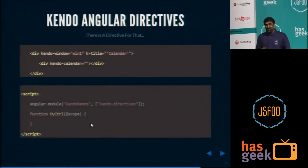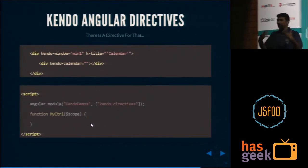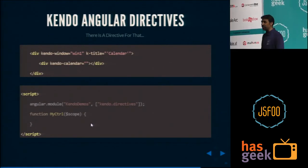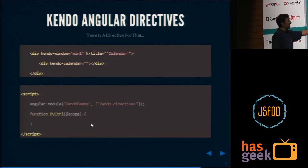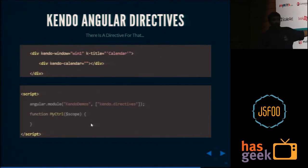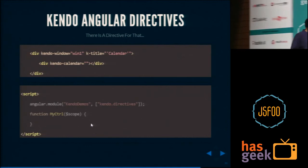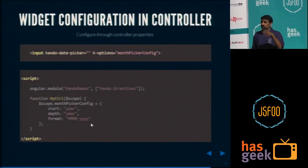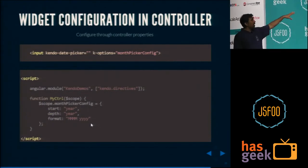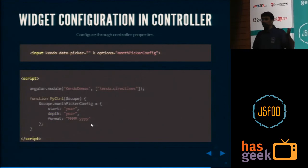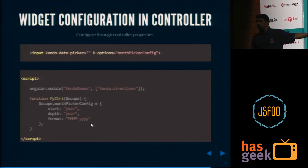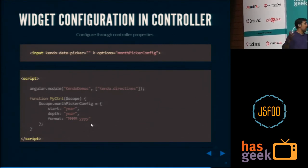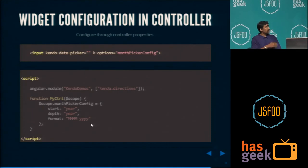So we give Angular directives out of the box. If you see here: div kendo-window — I need a window widget, so all I do is use kendo-window, give it a name, set the title to calendar. All you need to do is write a module and declare kendo.directives as a dependency. You can configure the widget using your controller. For example, I want a date picker — kendo-date-picker — and the options come through a controller property: scope.monthpickerconfig with start, depth, format — these are the semantics of the kendo date picker.